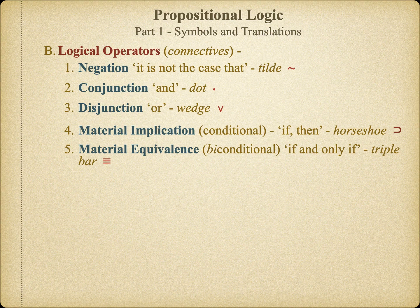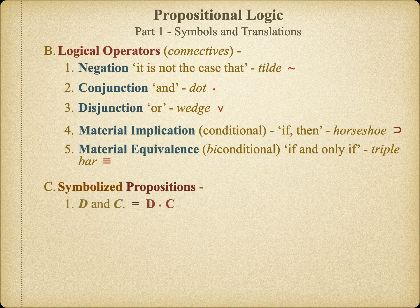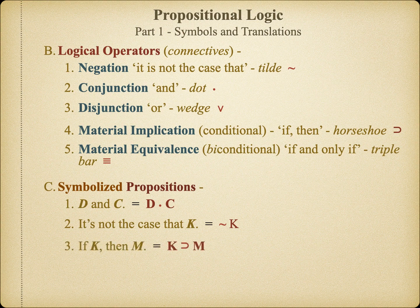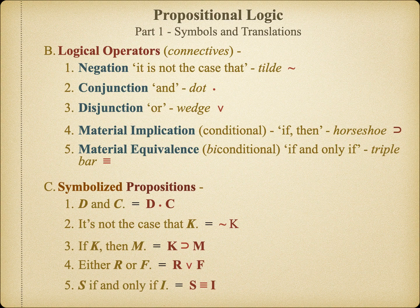Now that we have symbols for our logical operators, we can eliminate any remaining words in our complex propositions, leaving us with completely symbolized complex propositions. D and C becomes D dot C. It's not the case that K becomes tilde K. If K then M becomes K horseshoe M. Either R or F becomes R wedge F. And S if and only if I becomes S triple bar I.